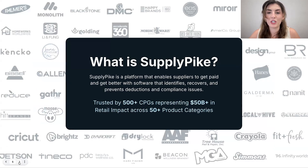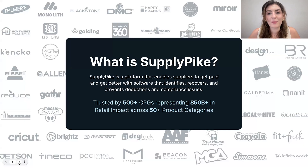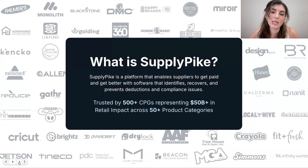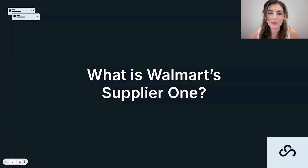Last thing - introducing you to Supply Pike. We're part of Supplier Wiki, which is within Supply Pike. Supply Pike is a platform that helps suppliers get paid and get better with software that identifies, recovers, and prevents deductions and compliance issues. We have solutions for Walmart, Target, Amazon, CVS, Home Depot, and Kroger, and the list is continuing to grow. We work with over 500 suppliers to help them recover revenue loss at retailers.